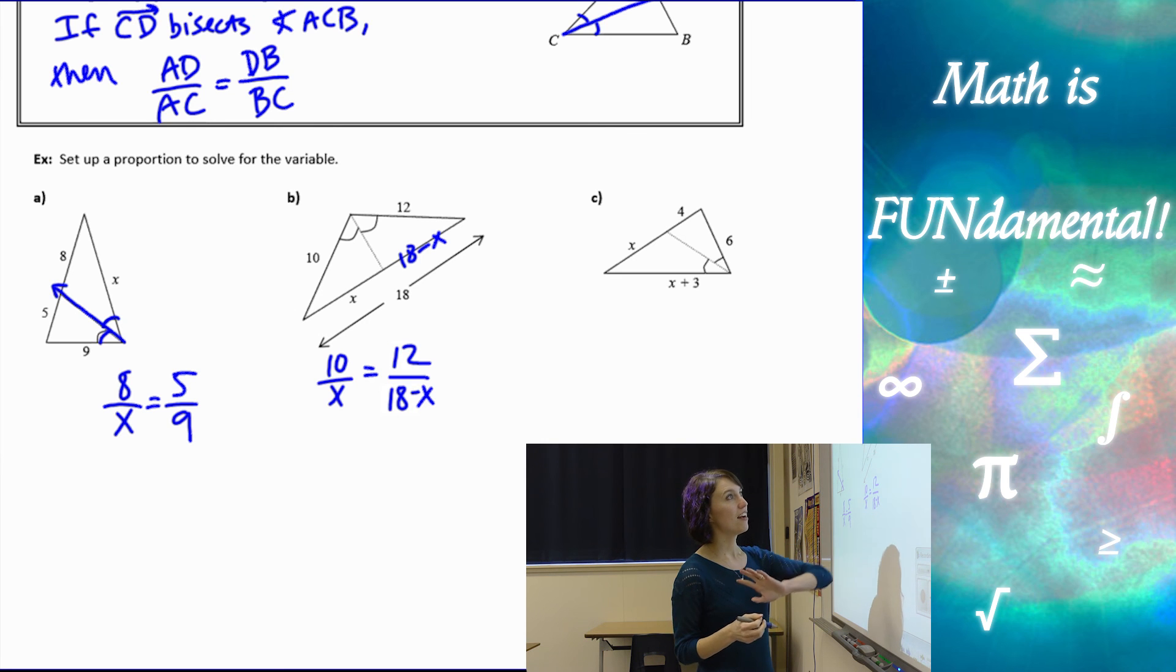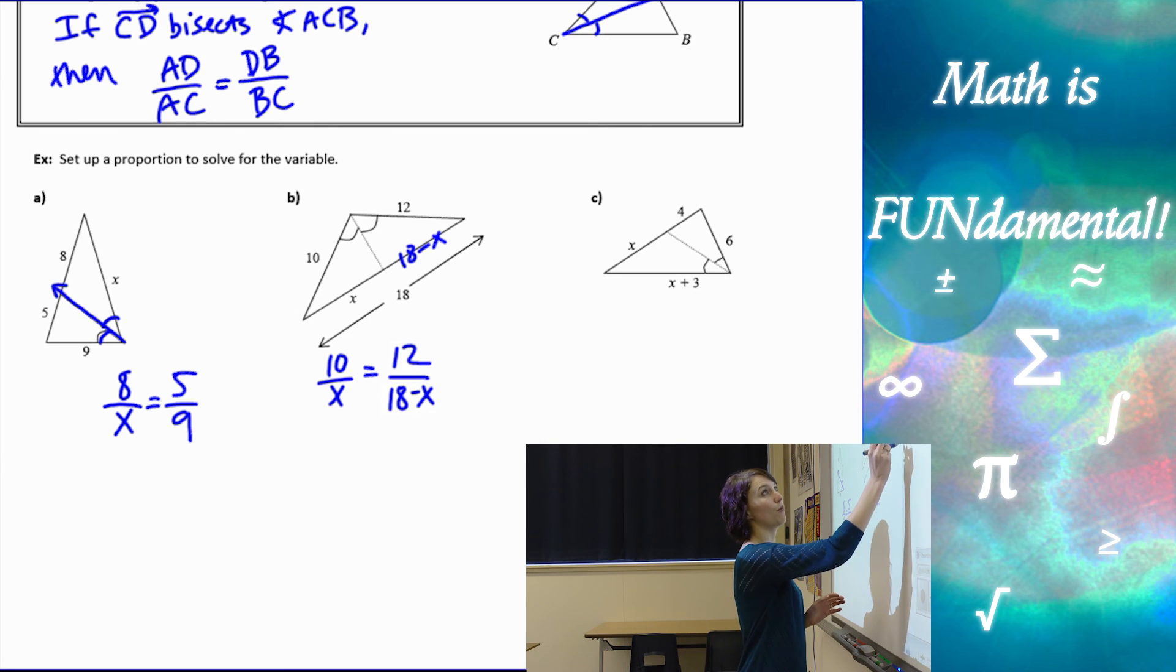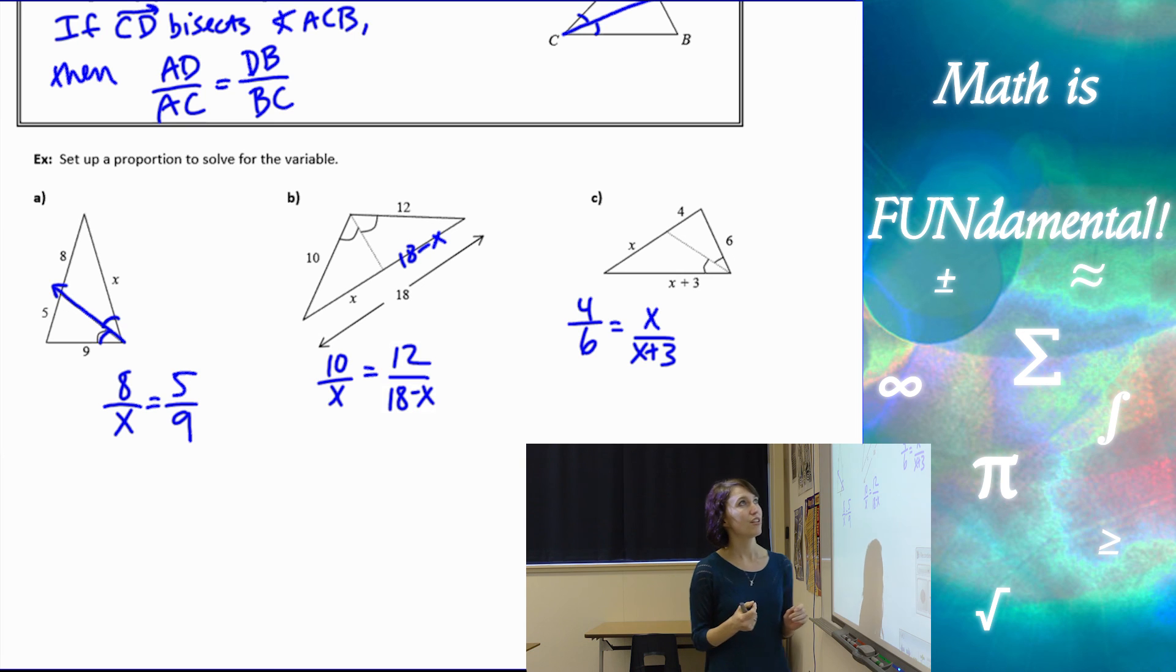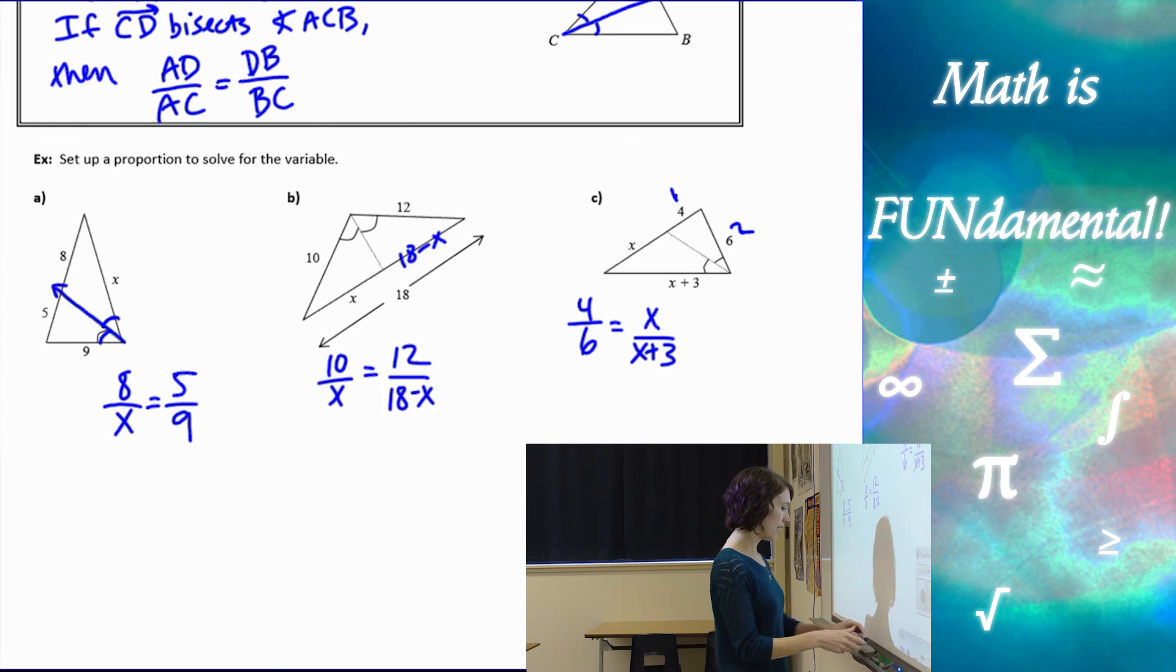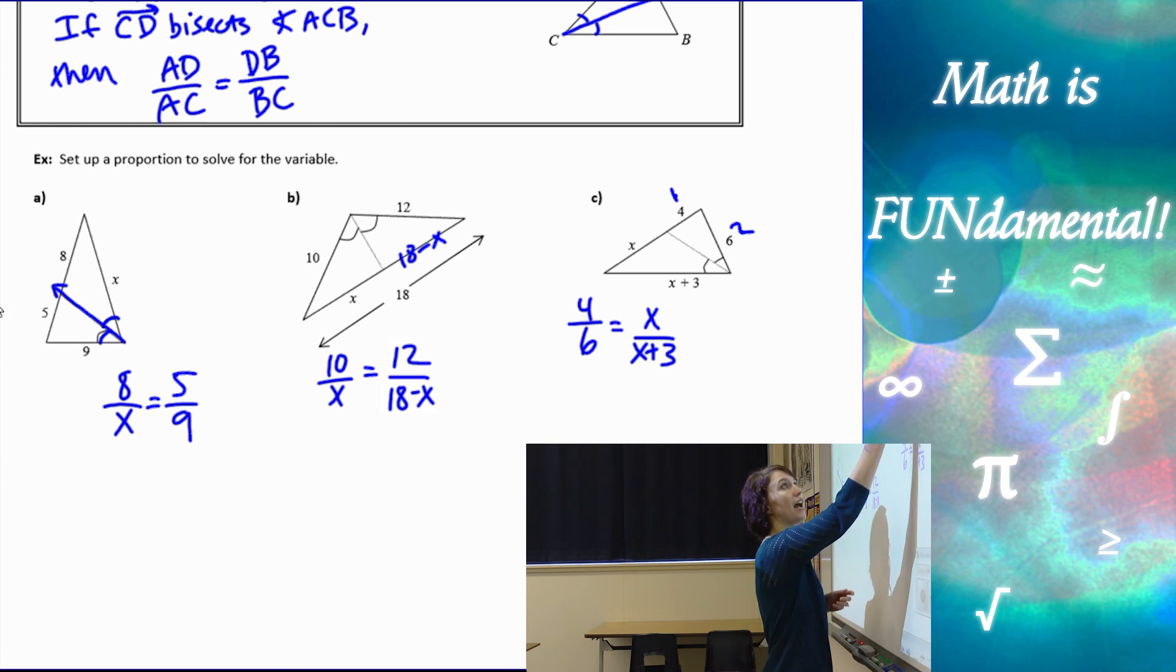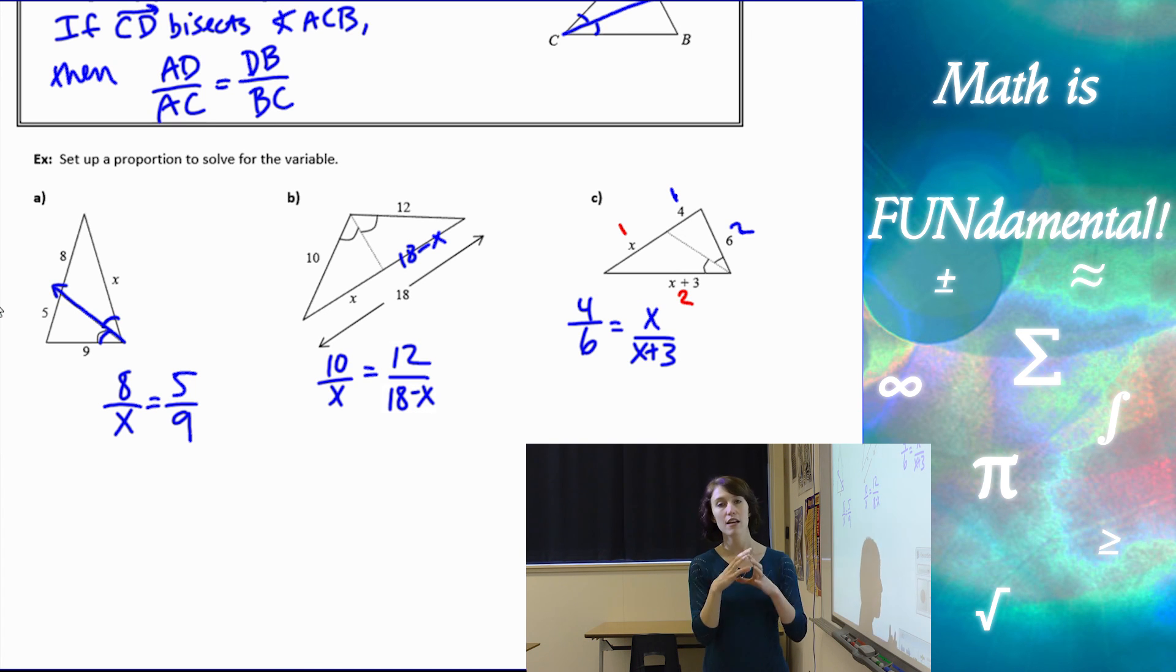And then here, again, same theorem. We have 4 over 6 equals X over X plus 3. Just make sure you're not mixing and matching. Notice if I started with the top one and I went over here, first and second, then my next fraction, I have to match it first and second each time. We want to make sure we're really keeping everything the same.